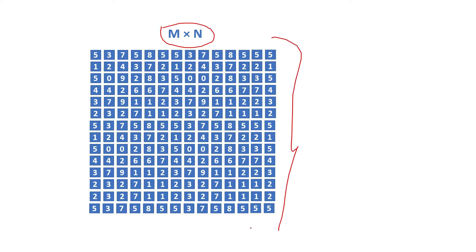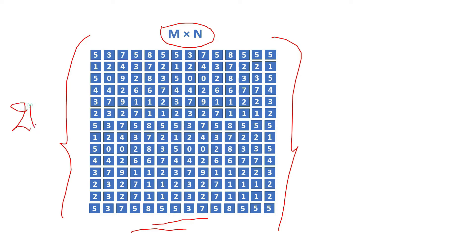In real life, the input image can be a grayscale or a color image. In that case, the minimum size of the image should be 21 by 21 for this non-local means-based filter.